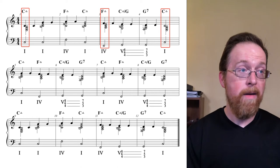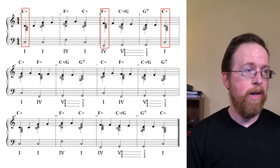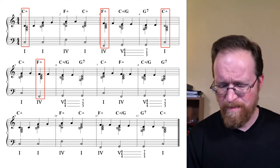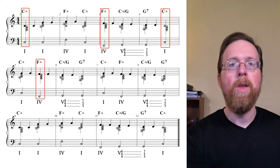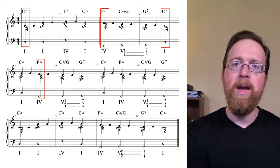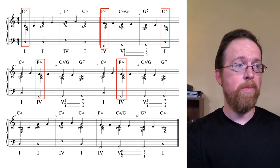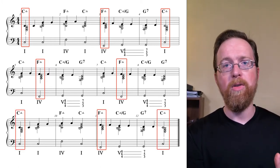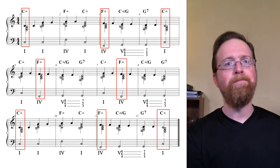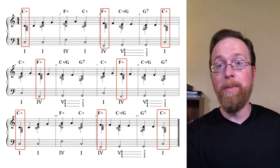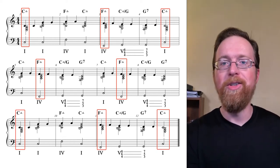In measure five, it happens on the F major seven again. By the way, measures seven and eight are identical to measures five and six. In the last four measures, measures nine through twelve are the same as the first four measures. Okay, what can we do to eliminate this strange dissonance?